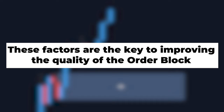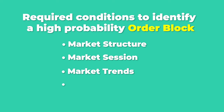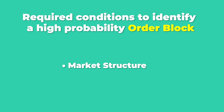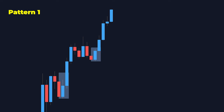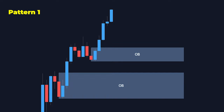These factors are the key to improving the quality of the order block: market structure, market session, market trends, and confirmations. Coming to market structure, this is the most common pattern you will see in the markets that happens every single day. Here we have a valid order block that meets our rules.